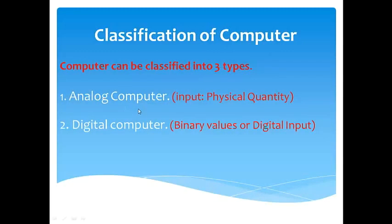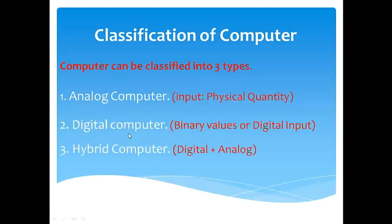Where the input is a physical quantity like temperature, pressure, and so on, that is an analog computer. In the case of digital computer, it uses digital values or digital signals. Hybrid computer is a combination of digital plus analog computer. That is why the name hybrid. This is a new generation derived from existing analog and digital computers.